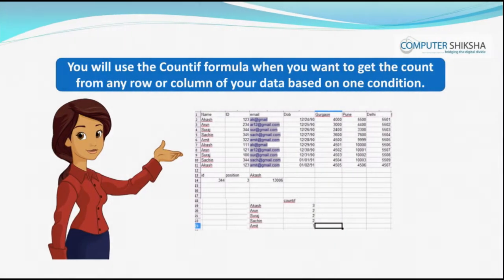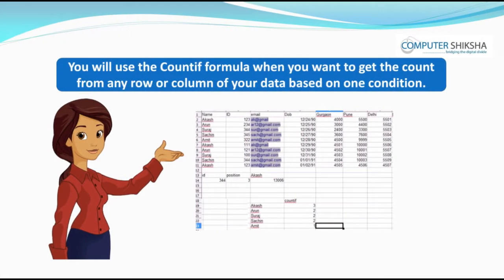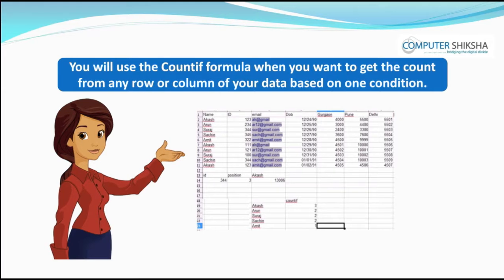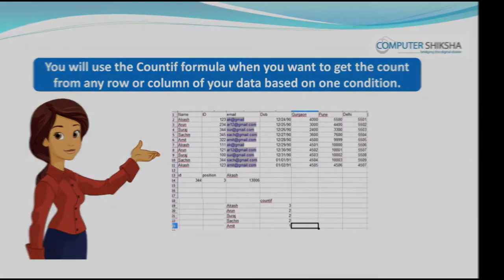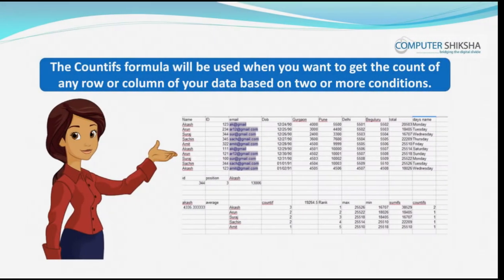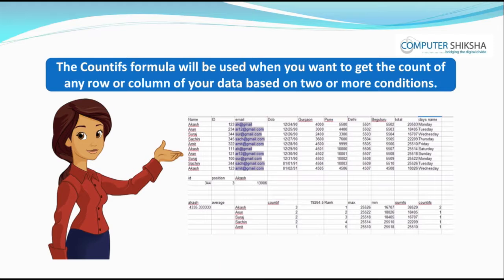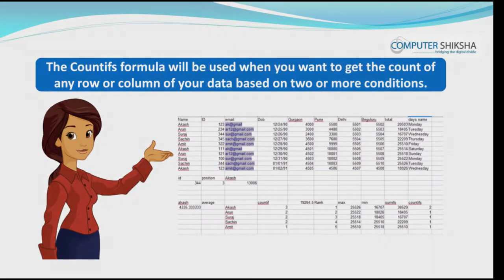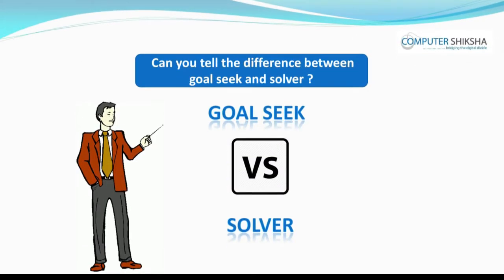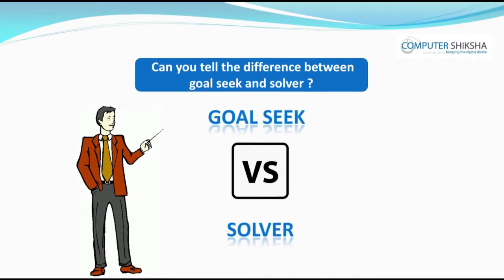Can you tell why we use COUNTIF and COUNTIFS? You will use the COUNTIF formula when you want to get the count from any row or column of your data based on one condition. The COUNTIFS formula will be used when you want to get the count of any row or column of your data based on two or more conditions.